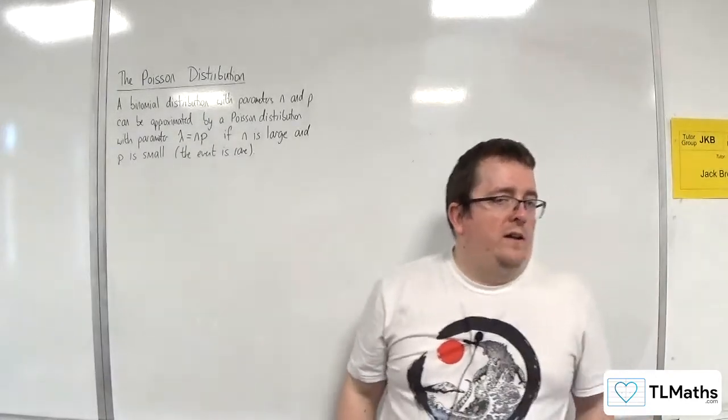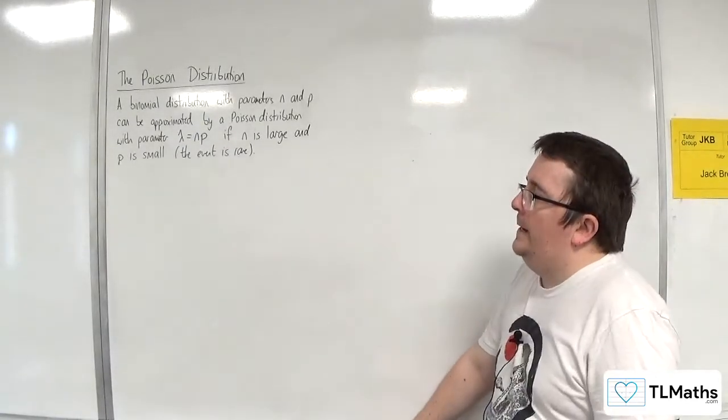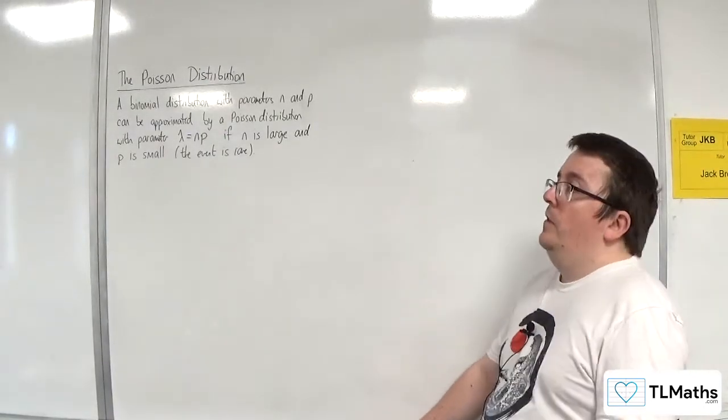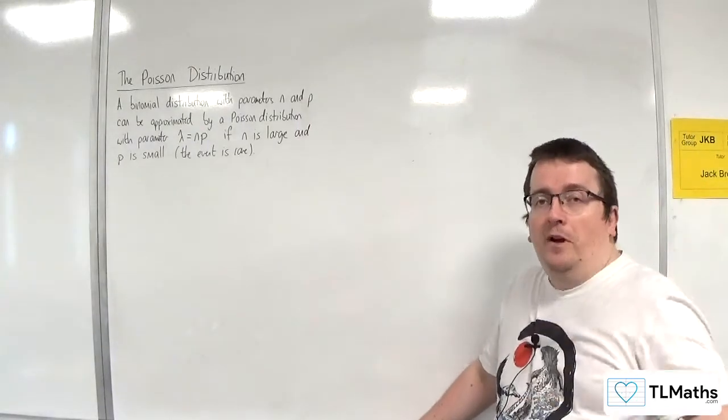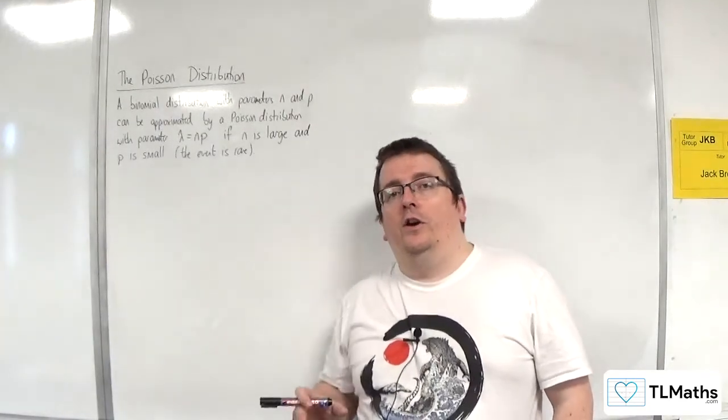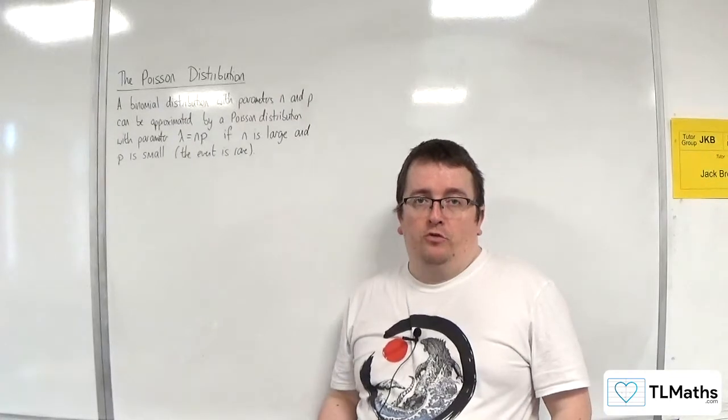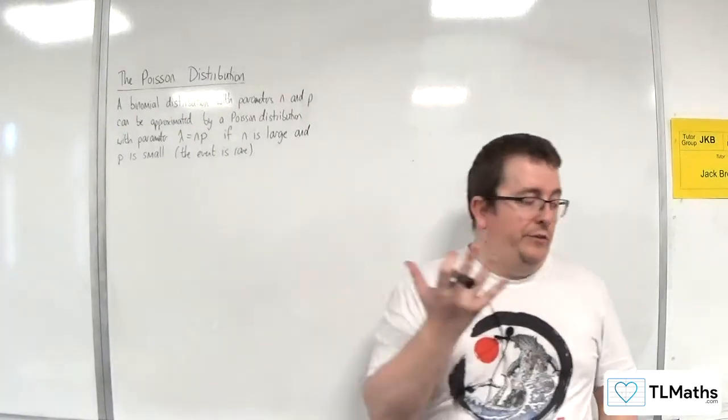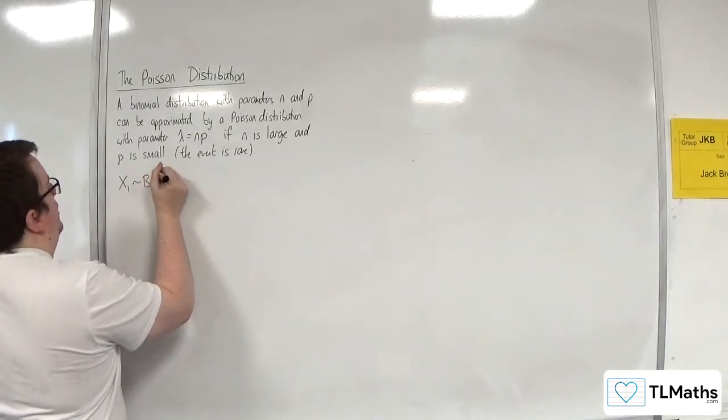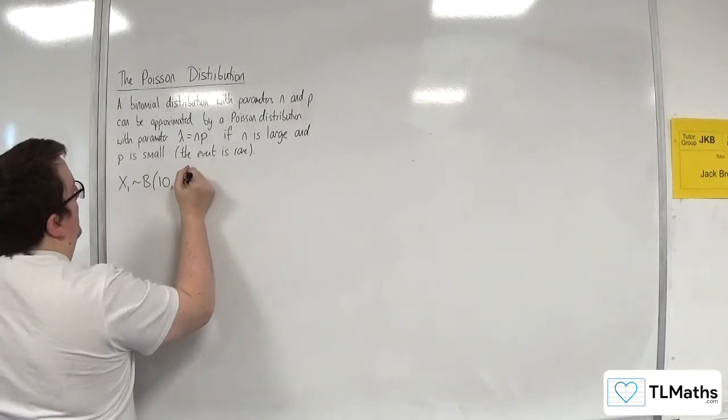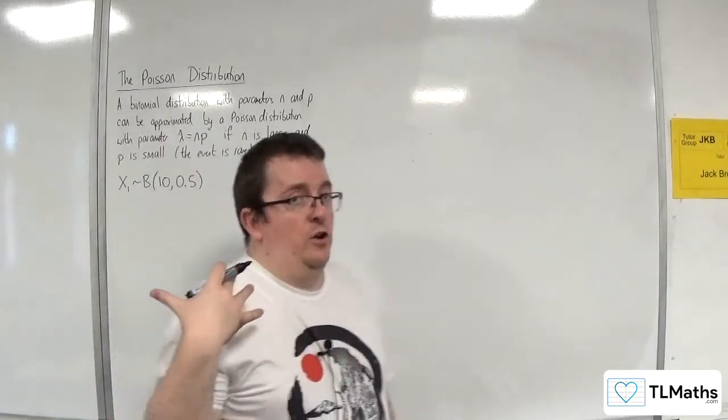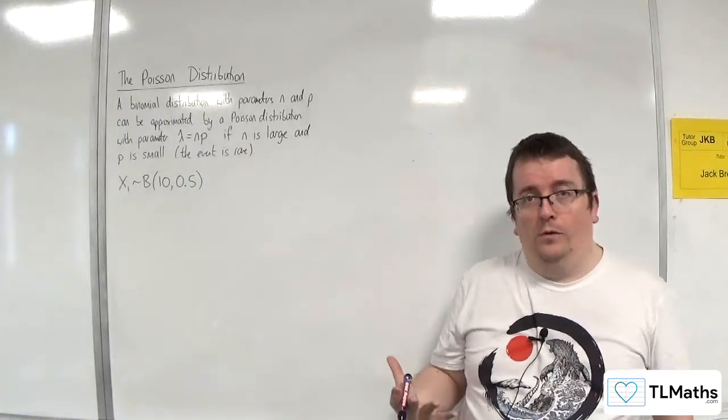Now, you might be going, well, how large is large? How small is small? Essentially, the larger n is and the smaller p is, the better the Poisson distribution is at approximating the binomial. So what we're going to do is we're going to take a look at a binomial distribution. Let's call it x1. And it is a binomial distribution where we've got n is 10 and p is 0.5. So n is definitely not large here. p is definitely not small.